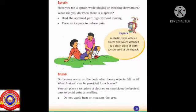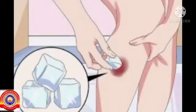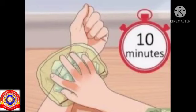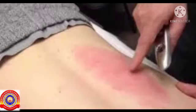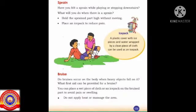Let's see the first aid that can be provided for a bruise. First, we have to place a wet piece of cloth or an ice pack on the bruised part to avoid pain or swelling. Then, do not apply heat or massage the bruised area. Massage may result in the breaking of skin in the bruised area. These are the first aid steps given for a bruise.